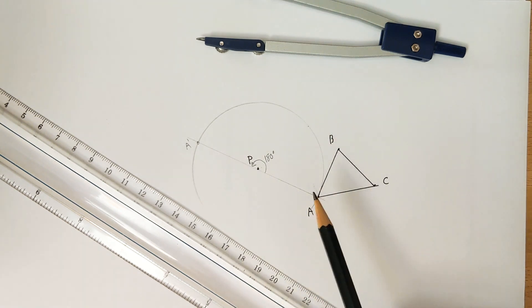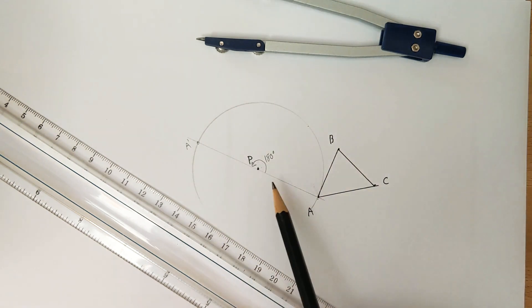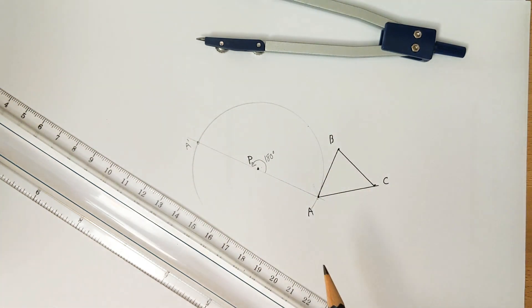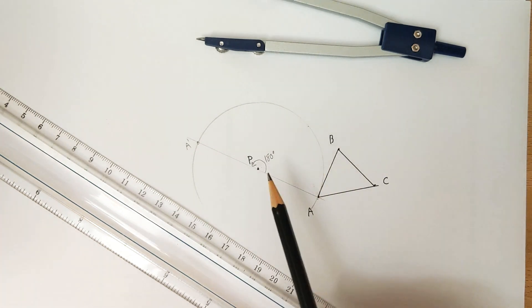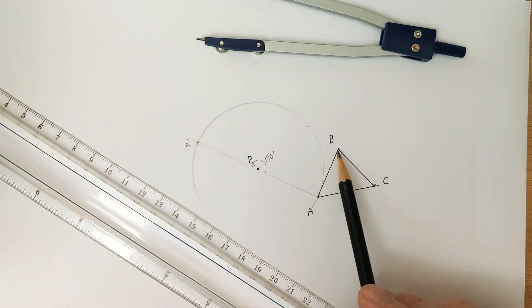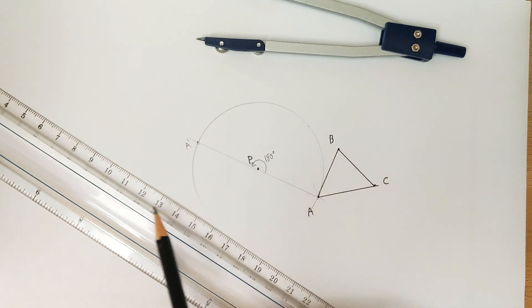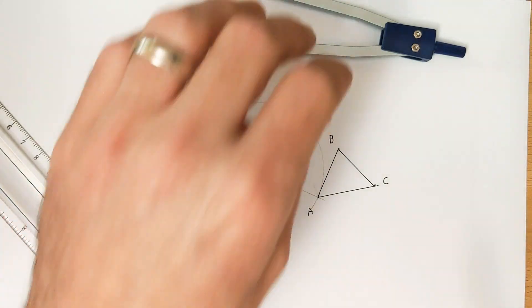We just repeat that exact same process for the other two points. We draw a circle centered at our center of rotation with radius out to the pre-image point, and then we draw the diameter of that circle from our pre-image point through the center of rotation and making sure to intersect the circle on the other side.